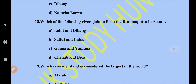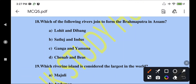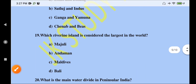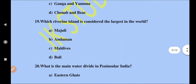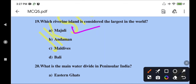Which two rivers join to form the Brahmaputra in Assam? The right option is Lohit and Dibang. Lohit and Dibang join together to form the Brahmaputra in Assam.